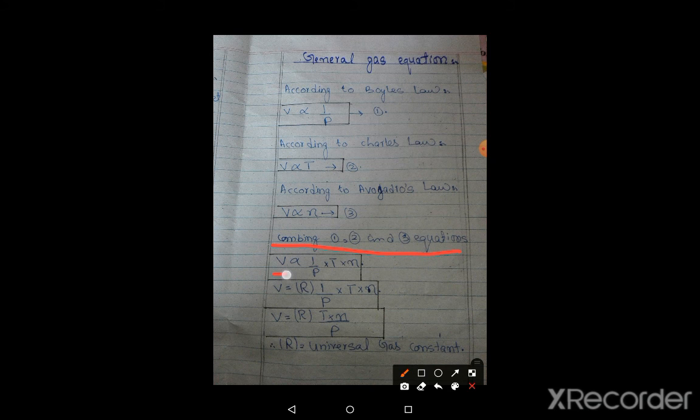V is inversely proportional to pressure, multiplied by T, multiplied by number of moles. When we combine these three laws, we remove the proportionality sign and put a constant. The constant is R. So V is equal to RT into n upon P. Or we can write PV is equal to nRT. This is the equation.